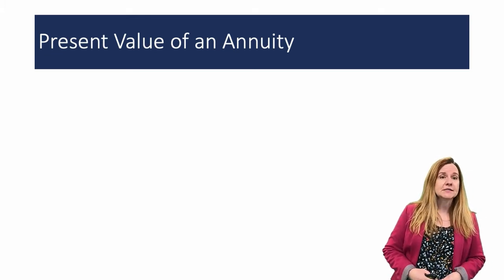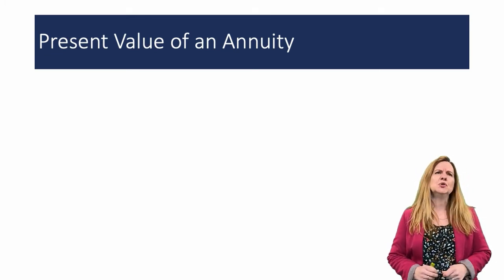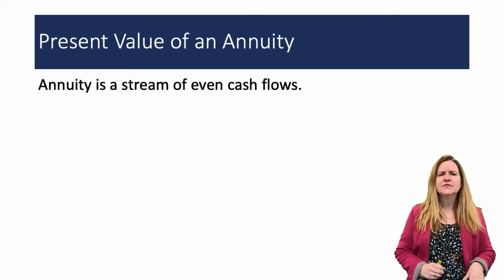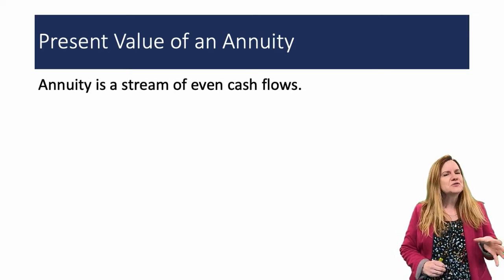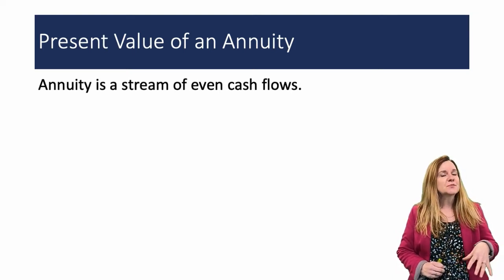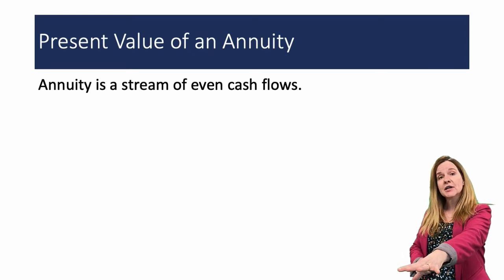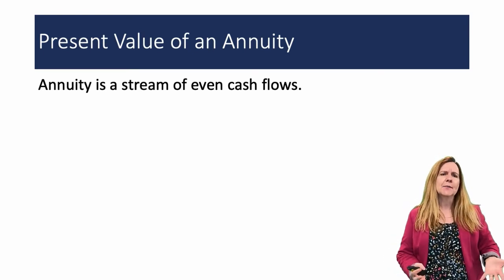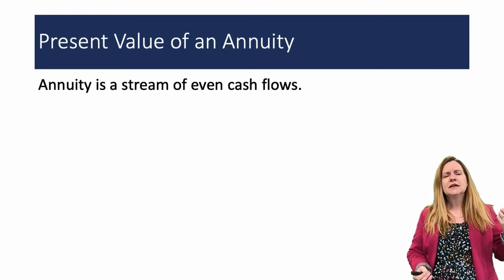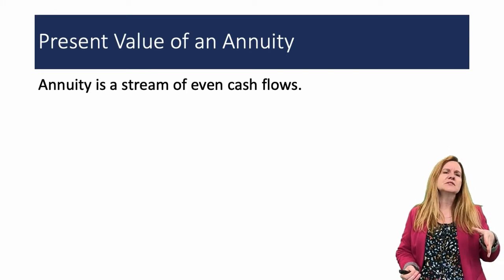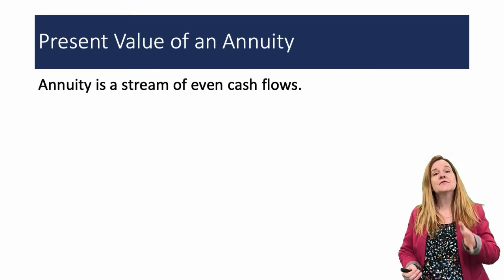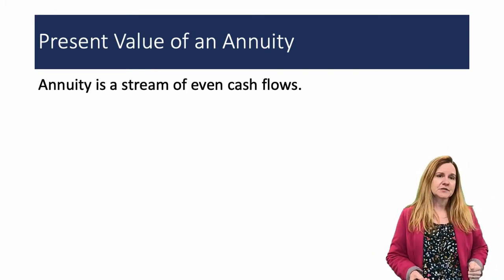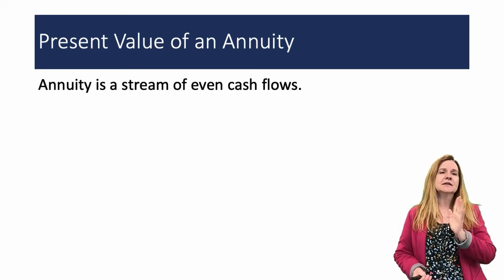Now we're going to look at annuities. What is an annuity? An annuity is a stream of even cash flows. We use the word cash flows because it could be outflows — money going out of the company — or inflows, money coming in. An example would be if you were going to get $1,000 every year for three years. That would be an annuity.